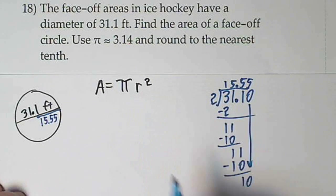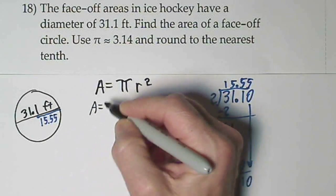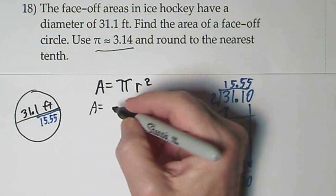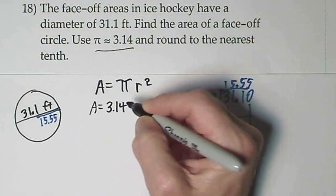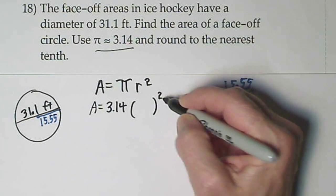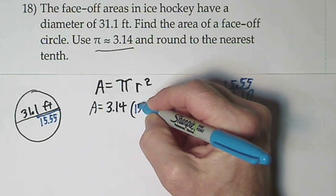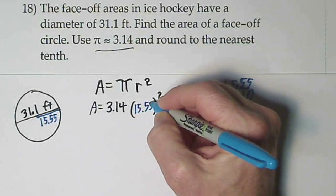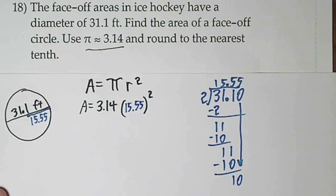And now we can use our formula here. So we have area. For π they want us to use 3.14. And then the radius we'll have to plug in here and we'll have to square it. So that's 15 and 55 hundredths. We're going to make us do some work here.